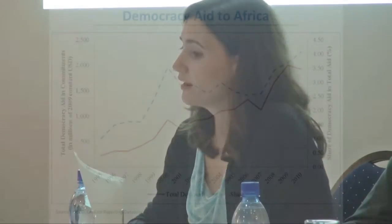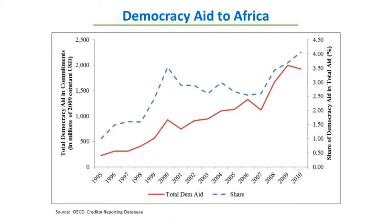It's also important to disaggregate because development aid is really the overwhelming share of assistance that goes to sub-Saharan Africa, so the development community has much greater leverage to influence government behaviors. Democracy assistance has been increasing steadily — looking at the solid red line, it's been increasing since the early 1990s when much of Africa was transitioning to democracies. But looking at the dotted line, it still comprises only about 4% of total overseas development assistance.